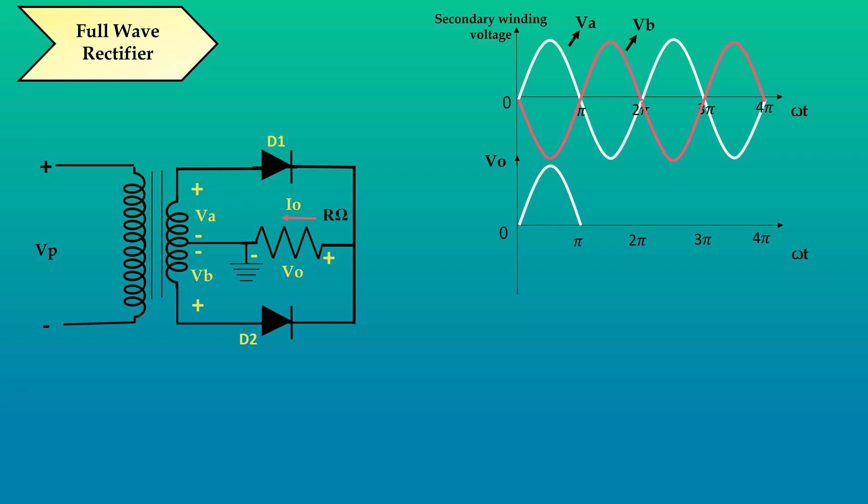During pi to 2 pi, the diode D2 acts as short circuit and D1 acts as open circuit. Therefore, the load voltage is equal to Vb. This process continues and we will get our full wave output waveform.